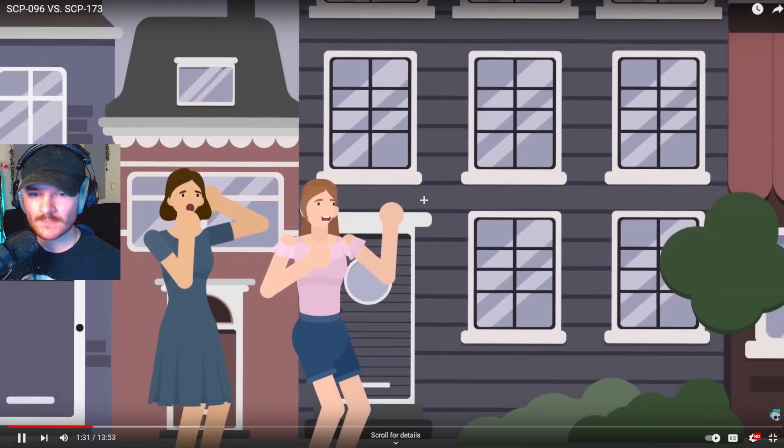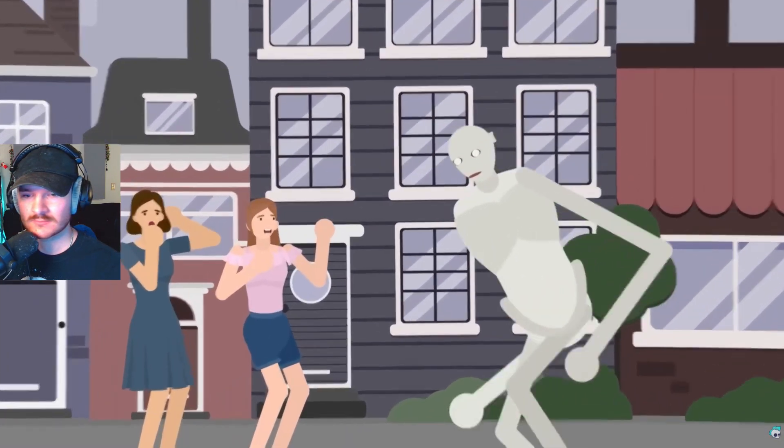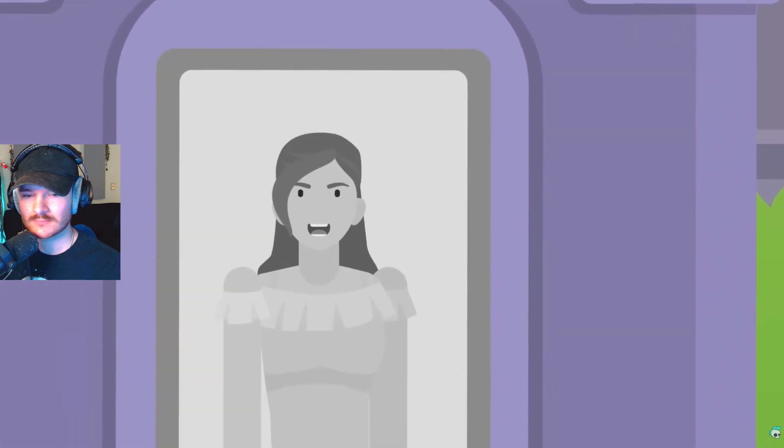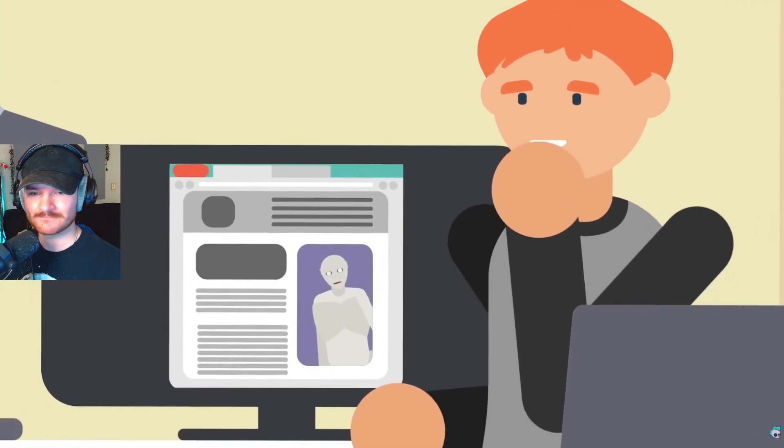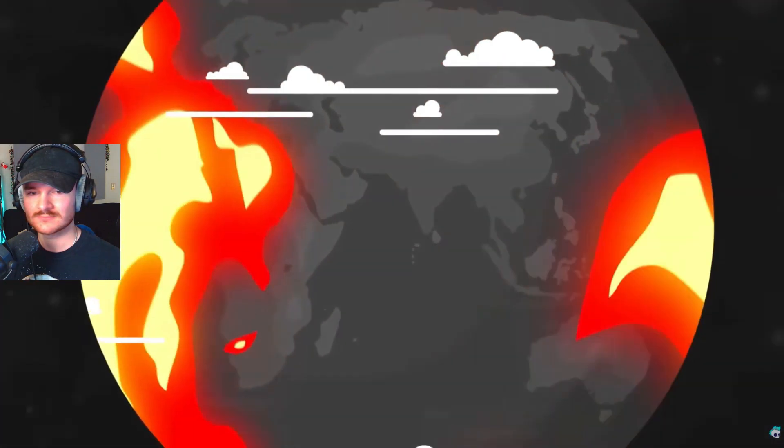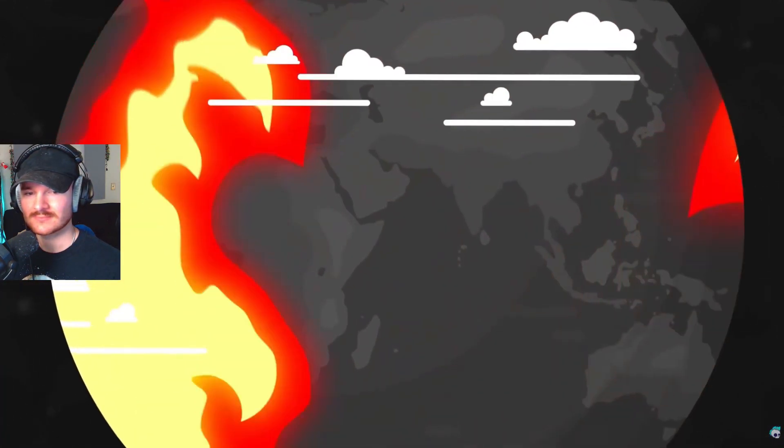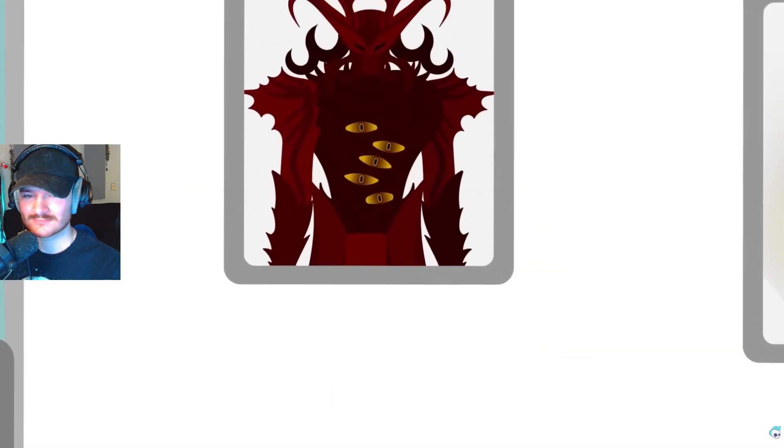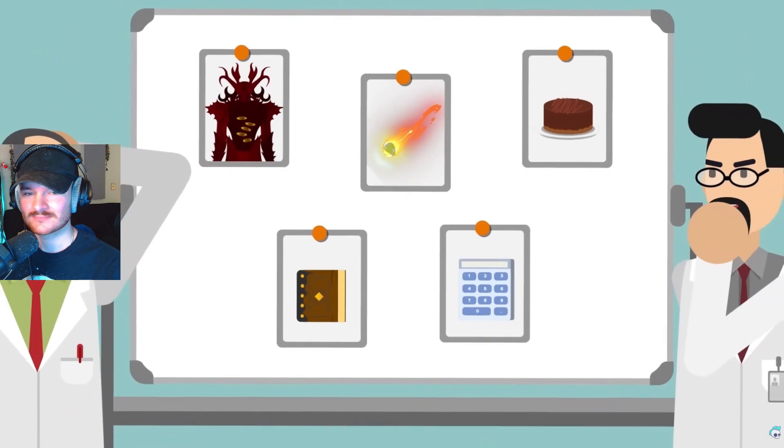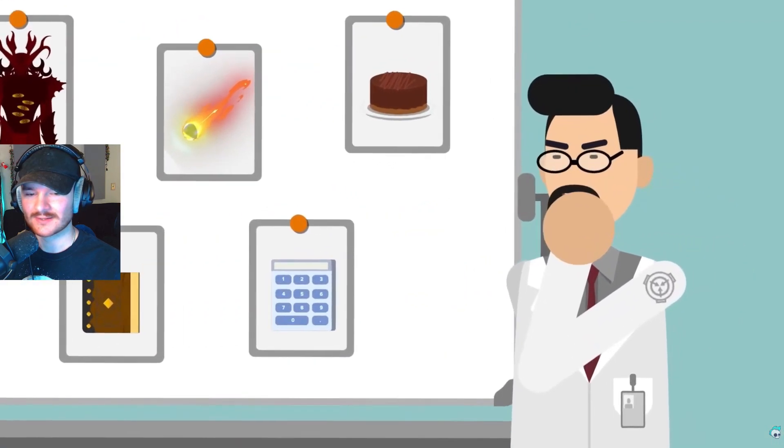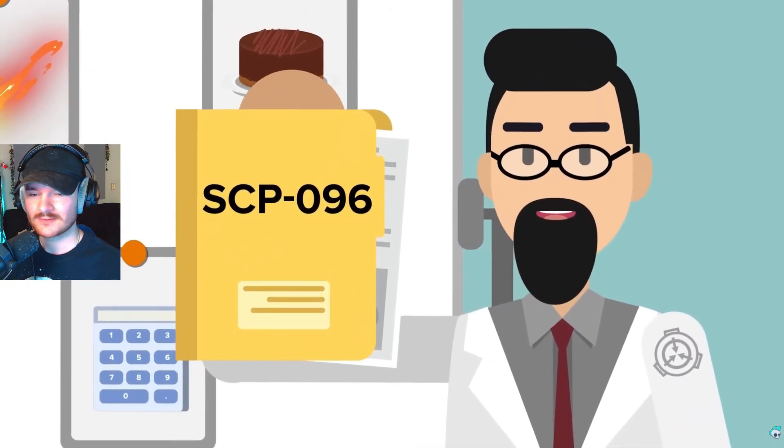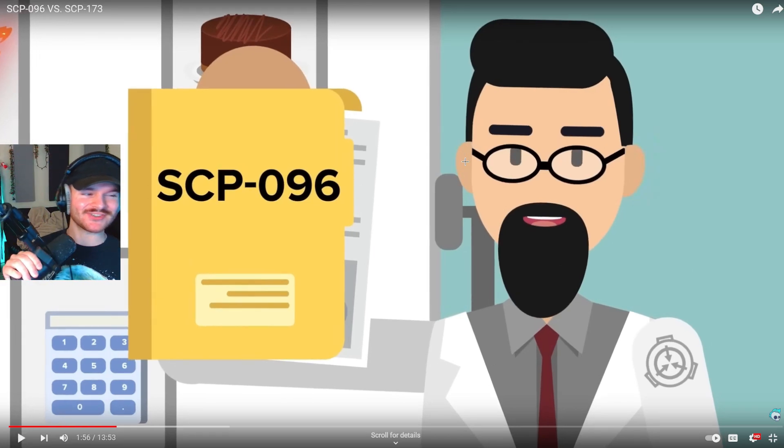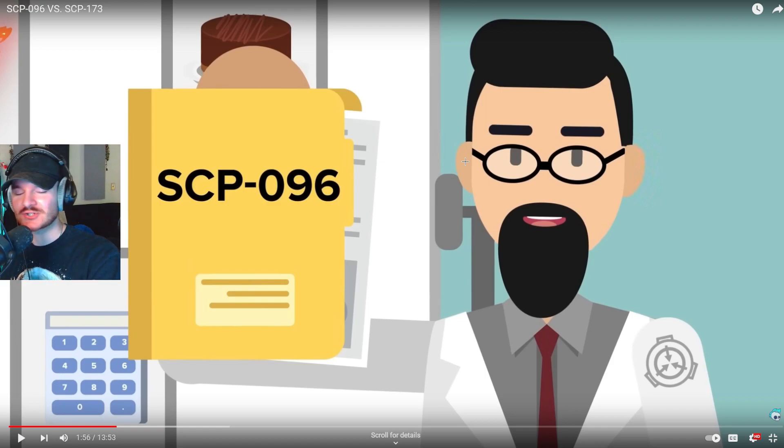It would form a psychic link to its victim, charge at them at breakneck speed, and only find its zen again once all of them were dead. And if a picture of SCP-096 was leaked onto the internet, it would cause a chain reaction that triggered an XK-class end-the-world scenario. There were plenty of creatures and entities that the Foundation knew about that could theoretically bring about the apocalypse. Yeah, of course. 096 was the most realistic.